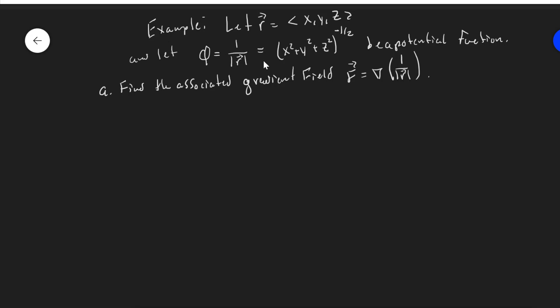So we're given a potential function, and we're first asked to find the associated gradient field, so that is we're computing del of 1 over magnitude R. So that's our first step.